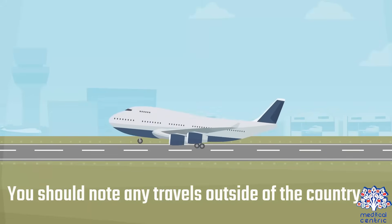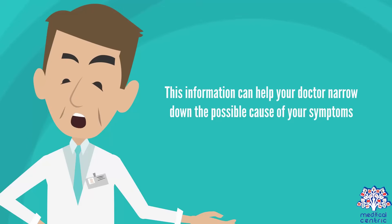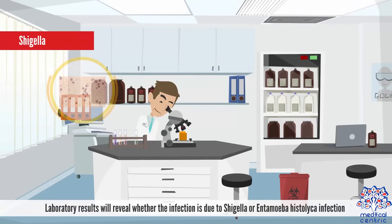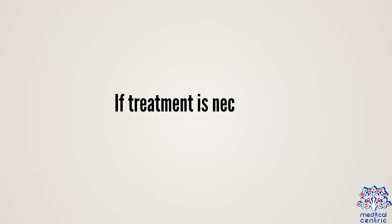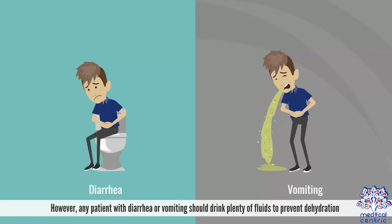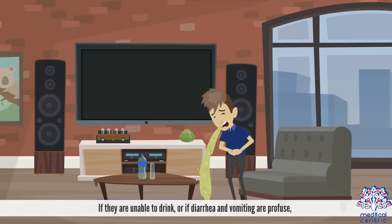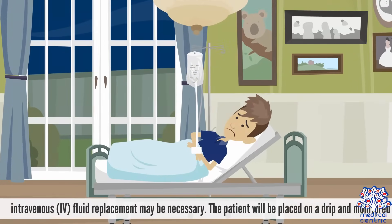You should note any travels outside of the country, as this information can help your doctor narrow down the possible cause of your symptoms. Treatment: Laboratory results will reveal whether the infection is due to Shigella or Entamoeba histolytica. Any patient with diarrhea or vomiting should drink plenty of fluids to prevent dehydration. If they are unable to drink, or if diarrhea and vomiting are profuse, intravenous (IV) fluid replacement may be necessary.